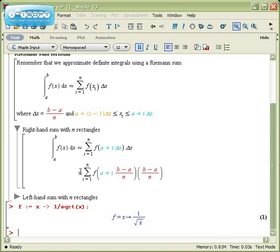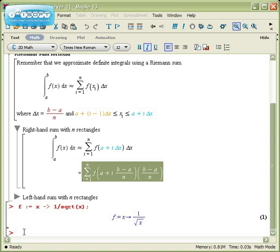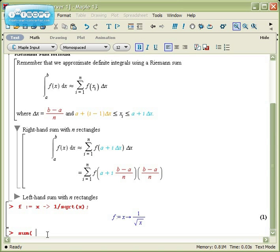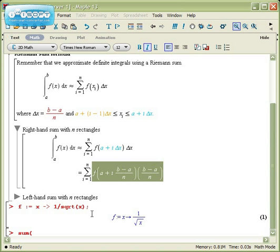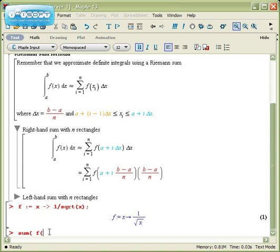Now I'm going to copy this formula into Maple. To do a summation in Maple, the command is sum. Next you tell it what you want to sum. I want to sum f of a - remember, a is the lower end of the interval. In this one we're integrating from 5 to 8, so 5 plus i times delta x.